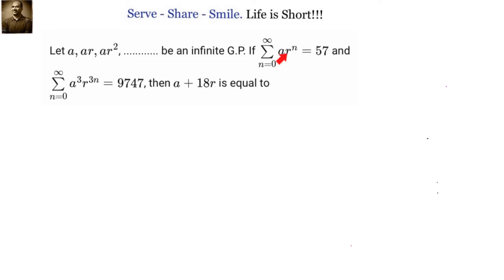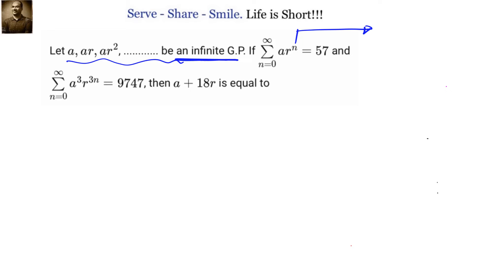Let A, A·R, A·R² be an infinite GP whose sum of n terms equals 57. We have another GP in which the starting term is A³ and the common ratio is R³, and the sum of that series is 9747. We have to find out what is A plus 18R.